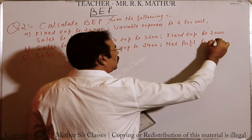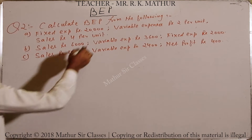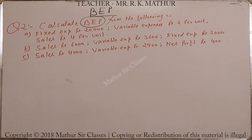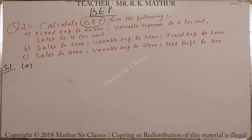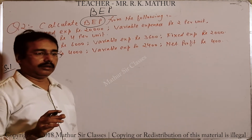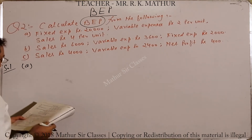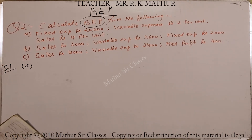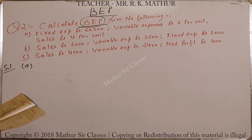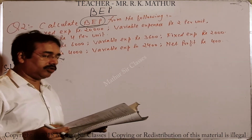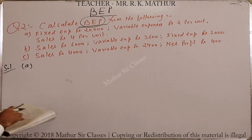Net profit दिया हुआ है। आपसे क्या माँगा है — BEP। हम पहला sum (A number) solve कर रहे हैं। पहले formula देखिए: BEP का formula है Fixed Cost divided by Contribution per unit। तो सबसे पहले contribution निकालेंगे।